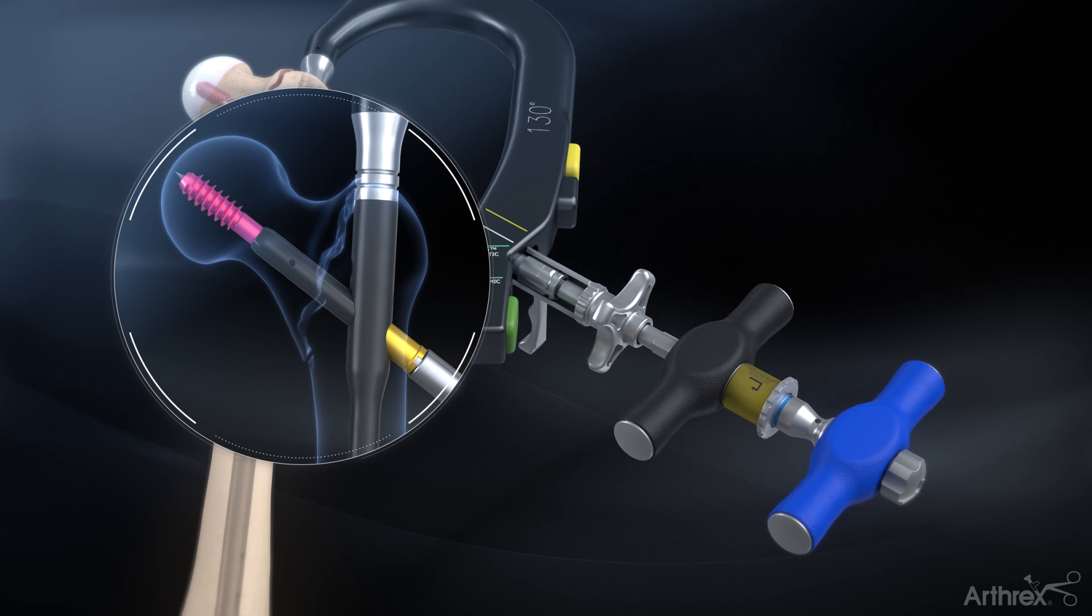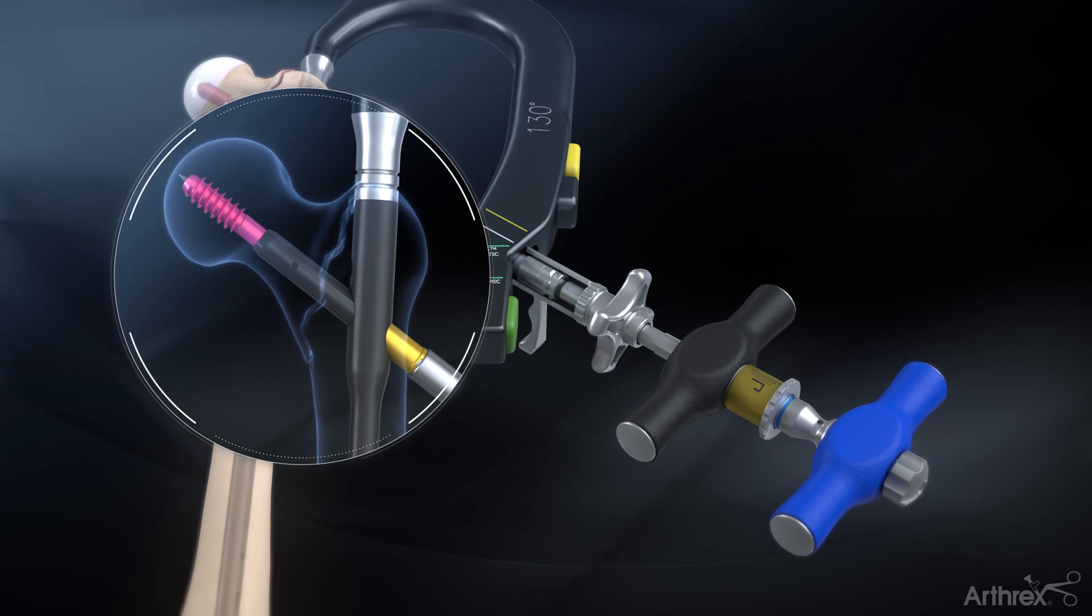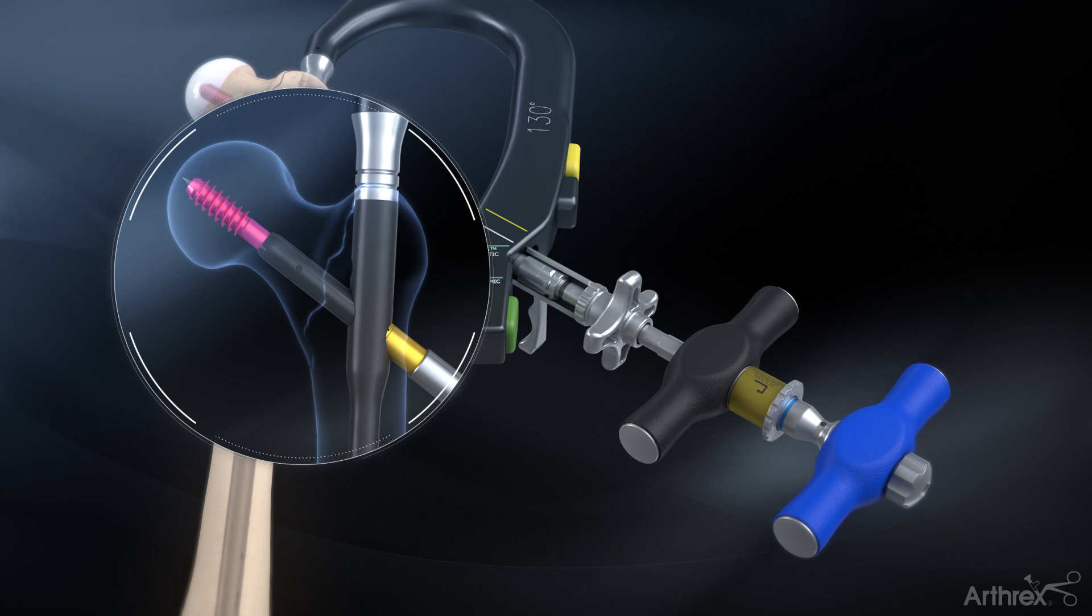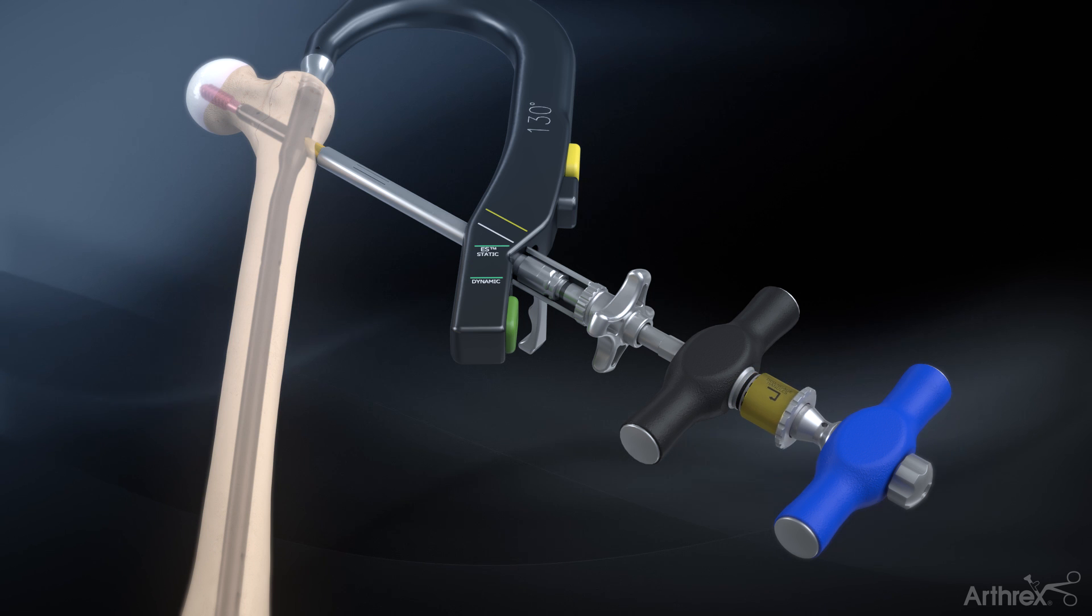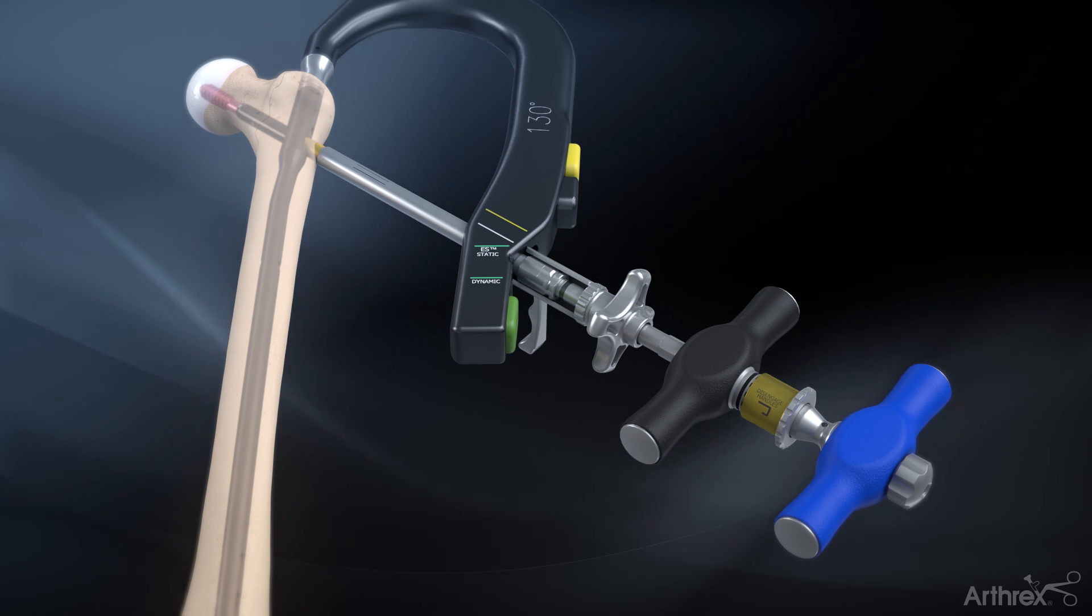For initial compression of the fracture, push the compression sleeve towards the targeting arm and rotate clockwise until the desired compression is achieved. Pull back on the gold knob and turn counterclockwise to disengage the blue handle and engage the black handle. The black line will now be showing.